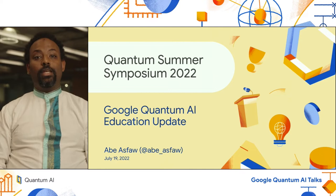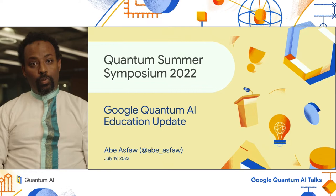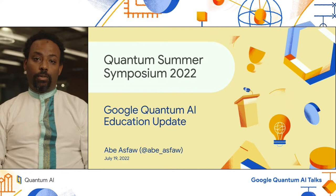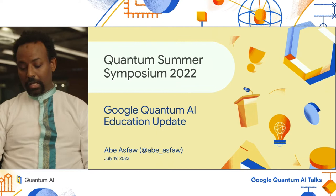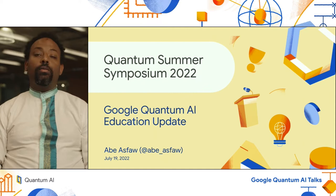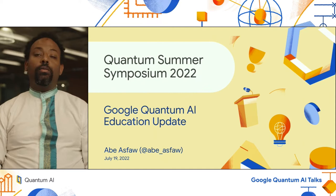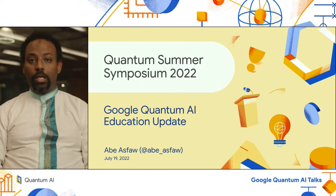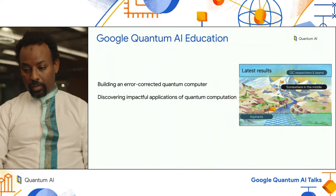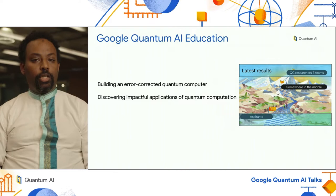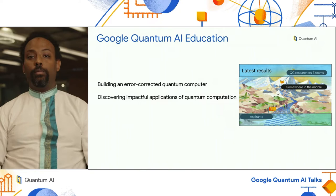Thank you to Catherine and Dave for those updates. Now that you've heard about Cirq 1.0 and the Quantum Virtual Machine, my name is Abe Asfal and I lead educational outreach at Google Quantum AI. Google Quantum AI's mission is twofold: building an error corrected quantum computer and discovering impactful applications of quantum computation. The goal of our education mission is to enable someone who is excited about quantum computing to make meaningful applications by exposing them to the latest research and providing tools that enable them to do so.